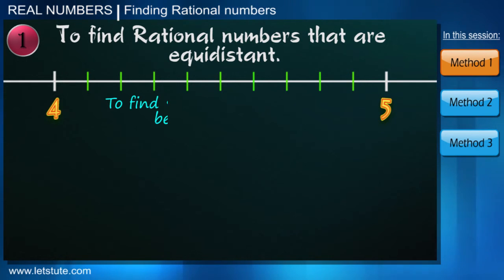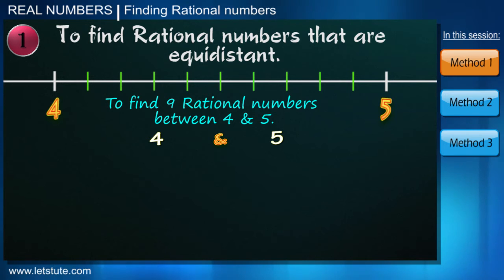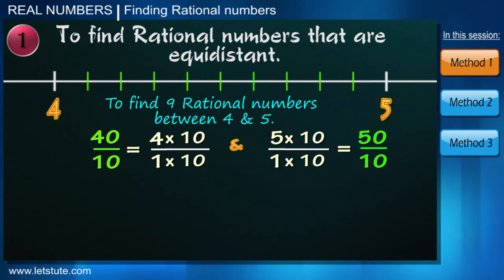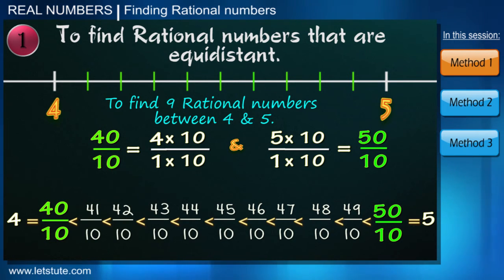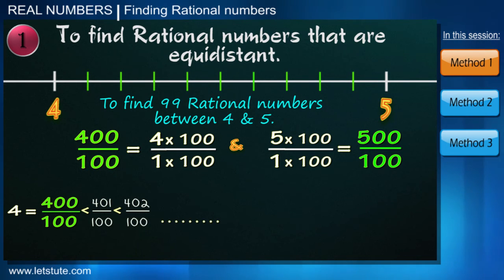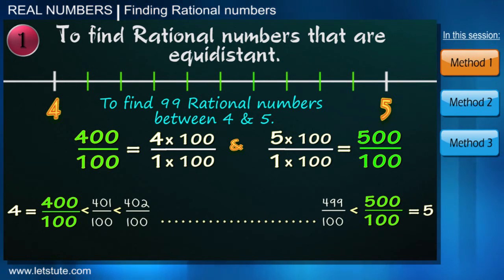Same way, if we want to find nine rational numbers, then we multiply the numerator and denominator of 4 and 5 by 9 plus 1, that is 10. Denominator is same now, so we again write numerator in increasing order. And these are the nine rational numbers between 4 and 5. Note that when we multiply by 100, then we would get 99 numbers between 4 and 5. And like this we can find infinite rational numbers between any two numbers.